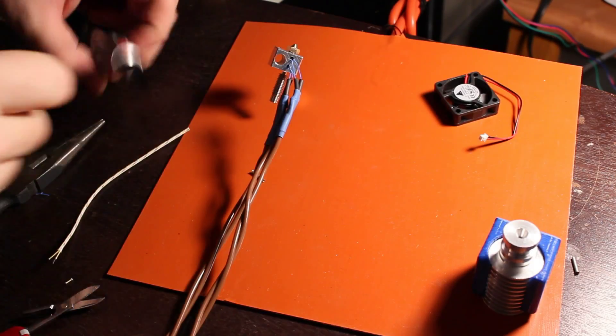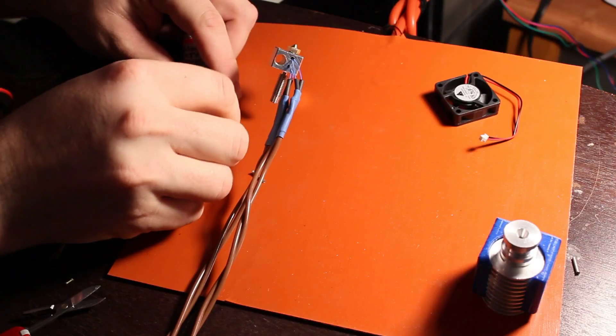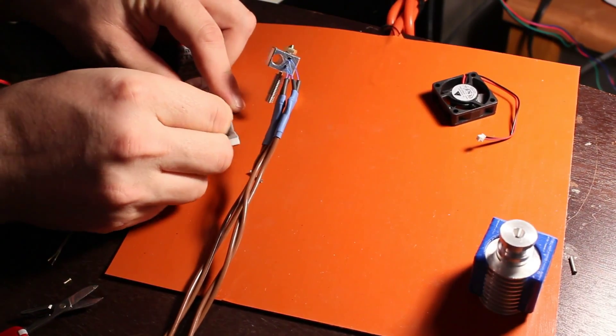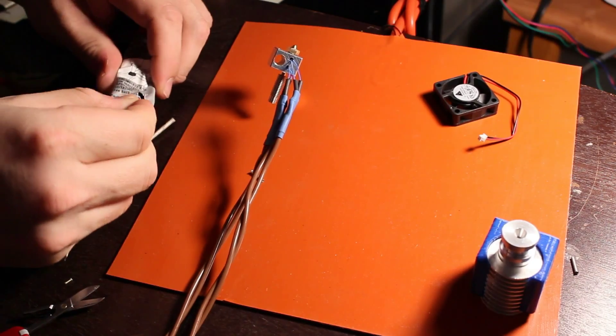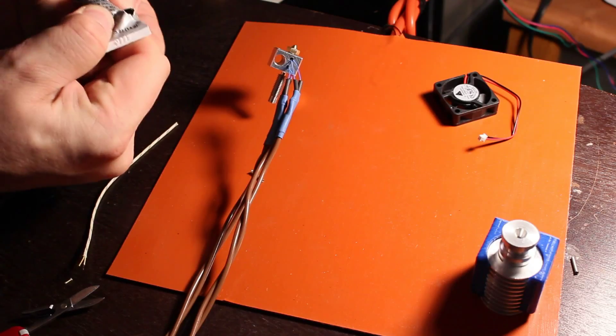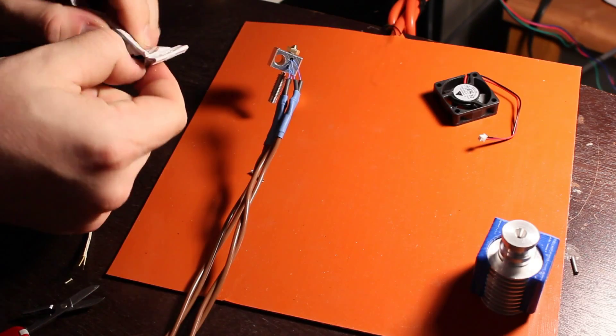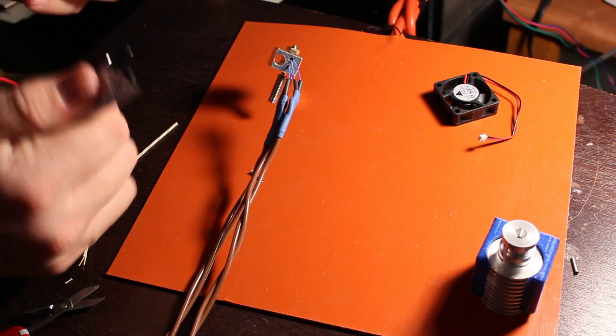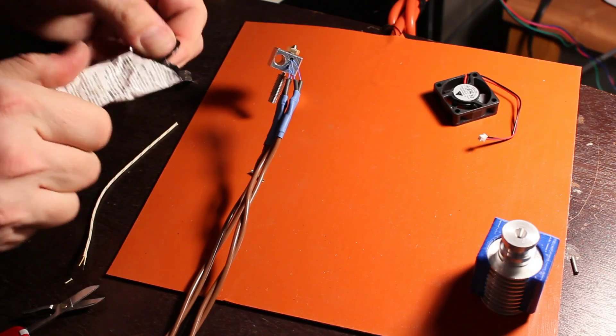All right. So, that's about the first seven steps of the E3D manual. I skipped a few and changed a few, but that's pretty much how it goes sometimes. Unfortunately, it looks like my silicone has completely hardened on me. So, let's see if there's any left in there.